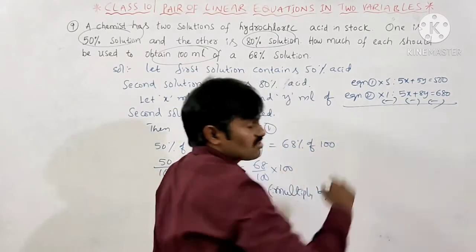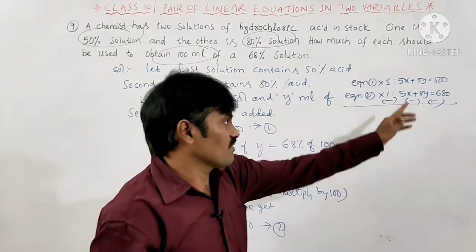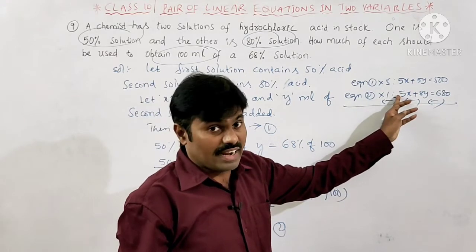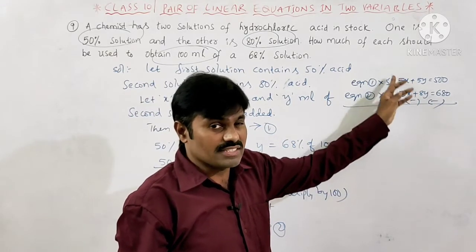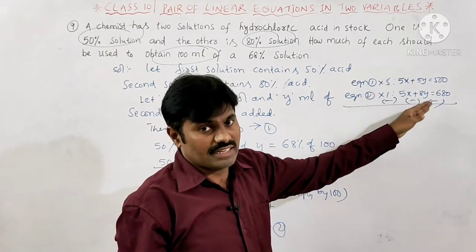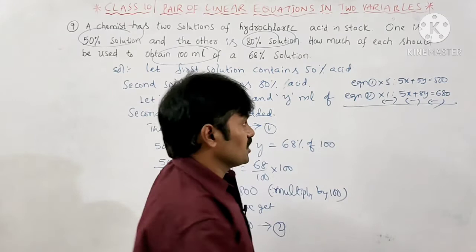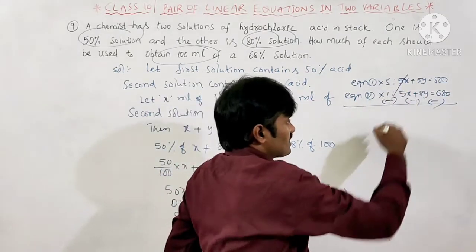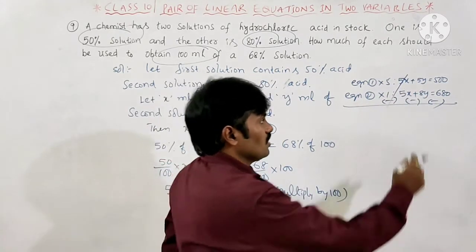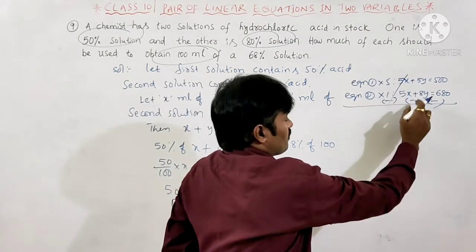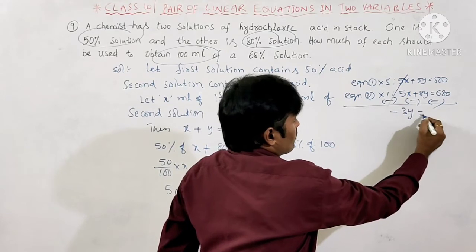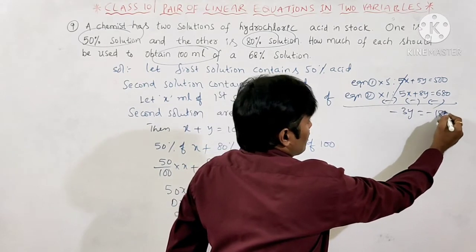Now we subtract the equations. Since both have 5X, subtracting cancels the X terms: 5X minus 5X is 0. Then 5Y minus 8Y gives minus 3Y, and 500 minus 680 gives minus 180. So minus 3Y equals minus 180, which gives Y equals 60.